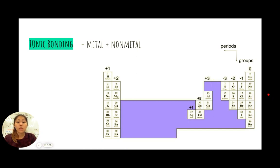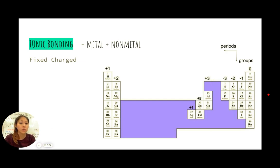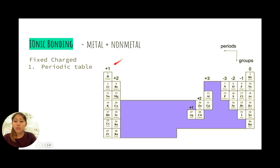When the outer shell is completely full, the atom is stable. There are two types of charged particles that can occur with these atoms: fixed charges and variable charges. Fixed charges means the atom will always have that same charge — it's a fixed number. Fixed charges are determined simply by looking at the periodic table.